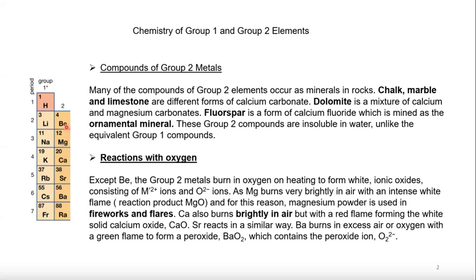Many compounds of group two elements occur as minerals — chalk, marble, and limestone are calcium carbonate; dolomite is a mixture of calcium and magnesium carbonate; and calcium fluoride is an ornamental mineral. These group two compounds are insoluble in water, unlike group one compounds.